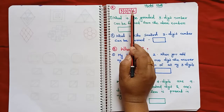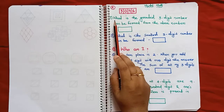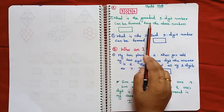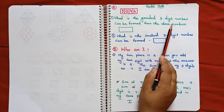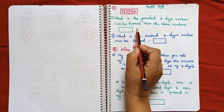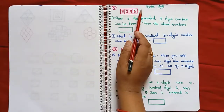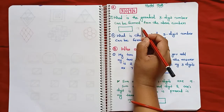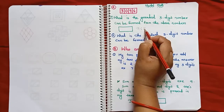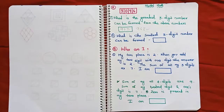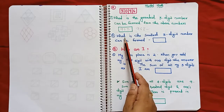The first question: I have written the numbers 3, 0, 9, and 6. What is the greatest 3-digit number that can be formed from these numbers? Remember, 0 cannot come first. The greatest digits in order are 9, 6, 3 — so the answer is 963. This is the greatest 3-digit number formed from those numbers.